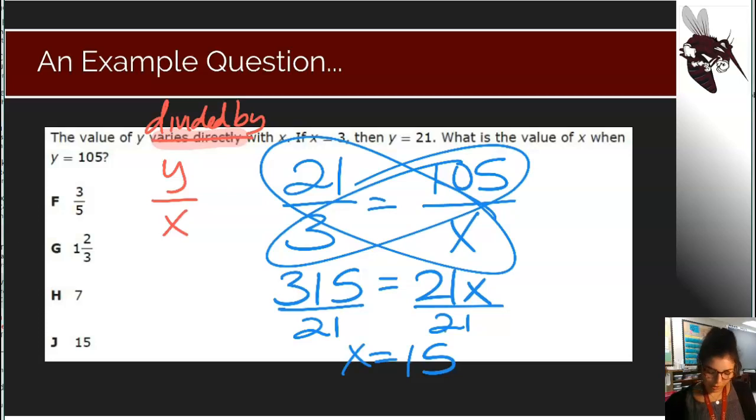So we know that the constant of variation has created a pattern or proportion that would create the solution of 15 when the y value is 105.